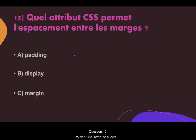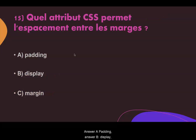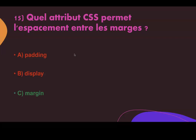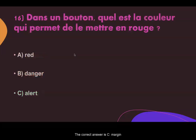Question fifteen. Which CSS attribute allows the spacing between the borders? Answer A: padding. Answer B: display. Answer C: margin. The correct answer is C, margin.